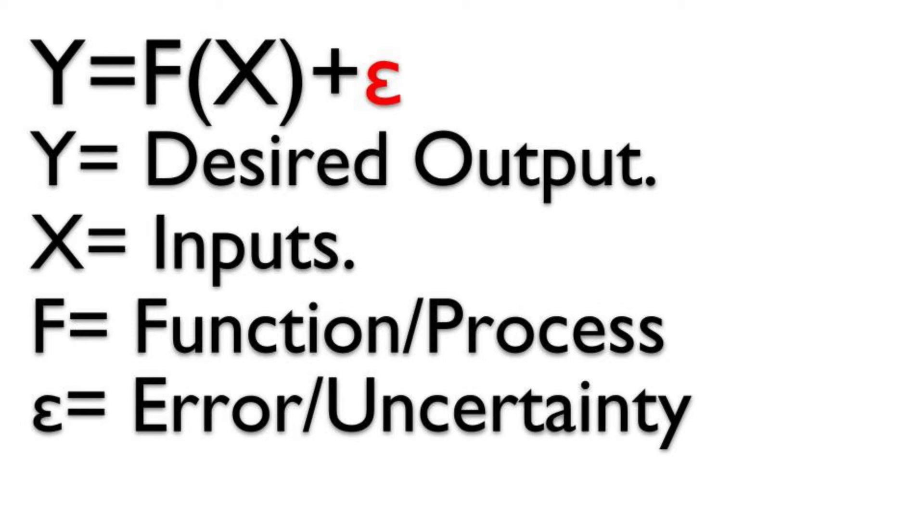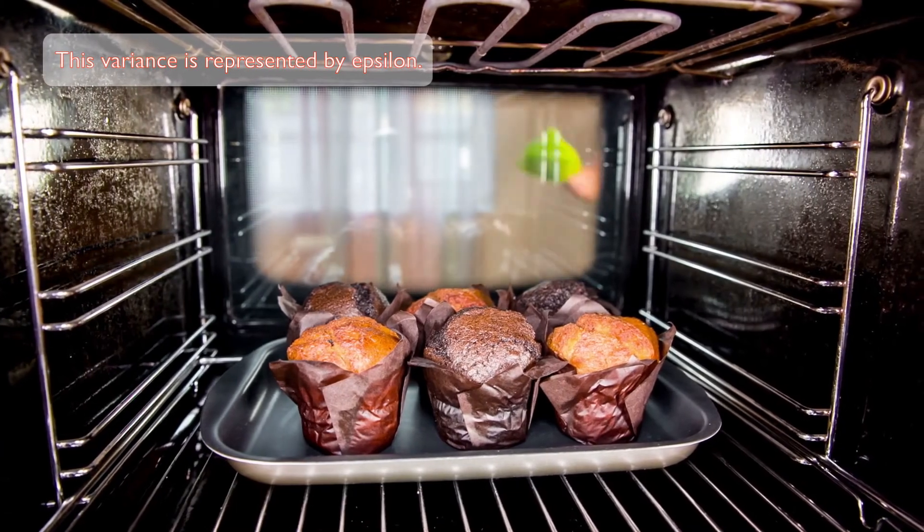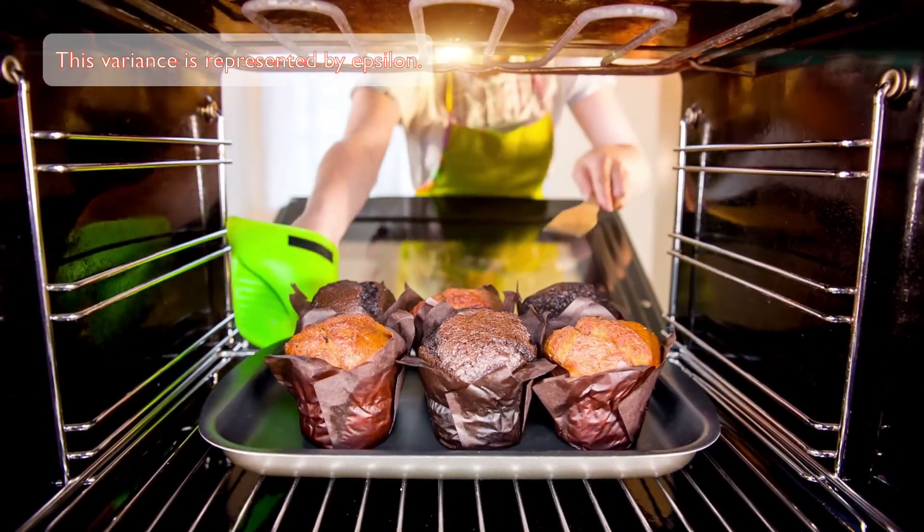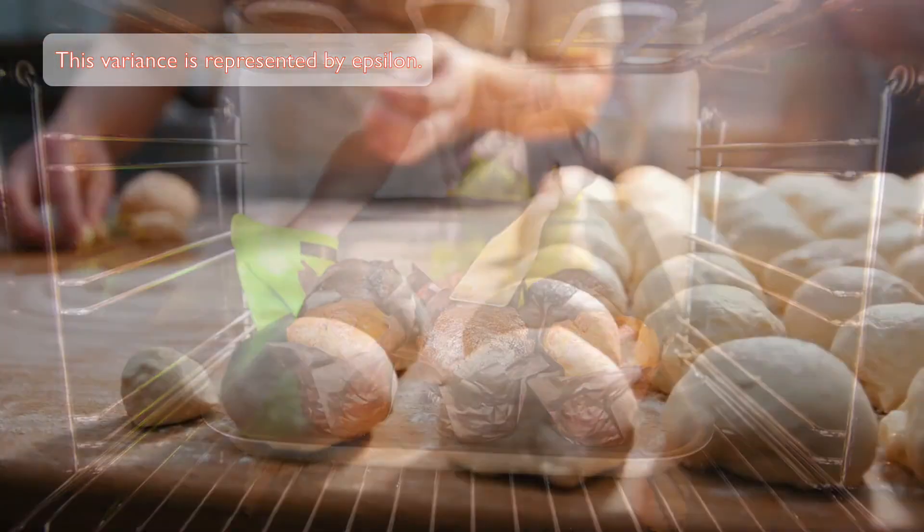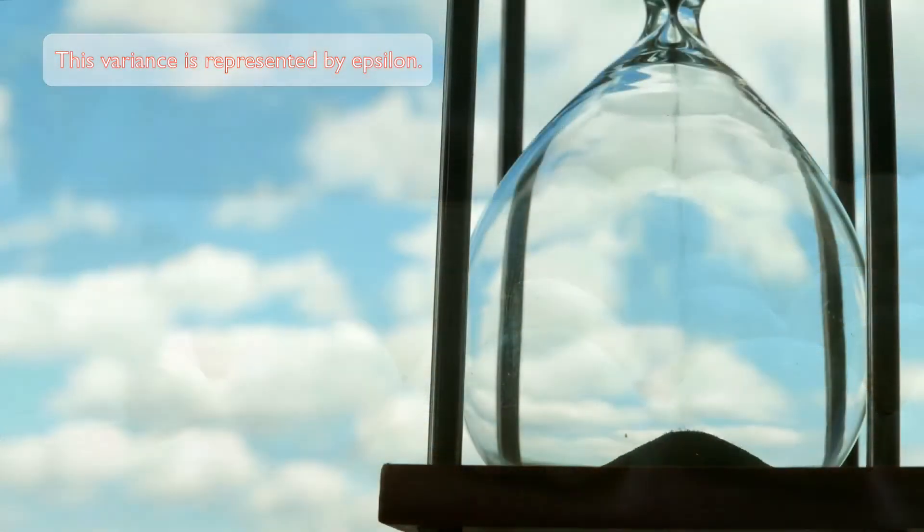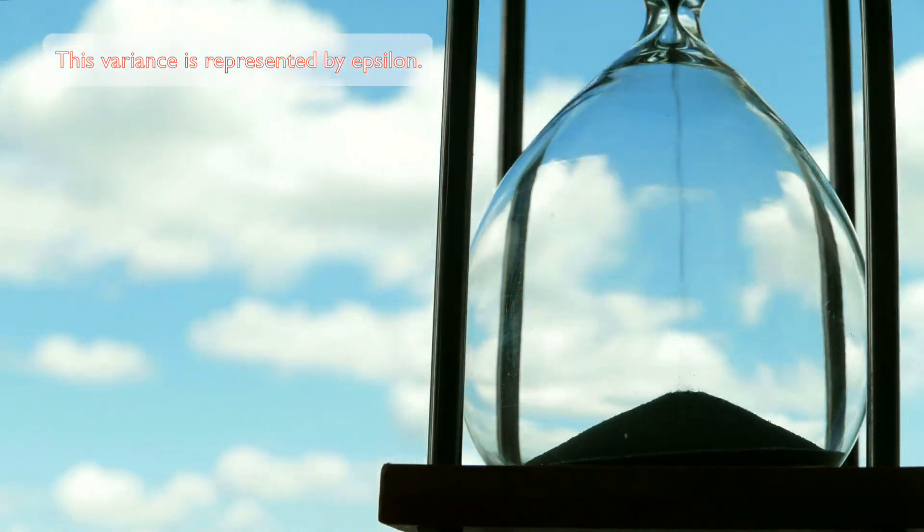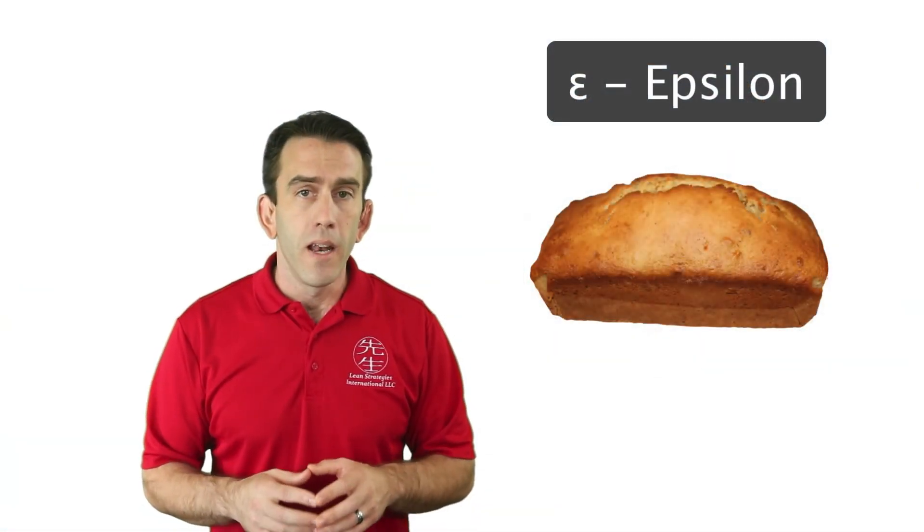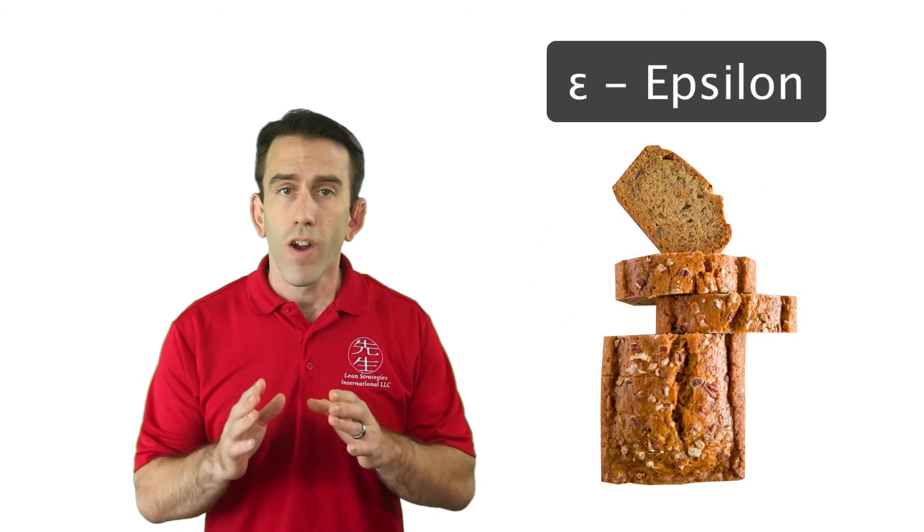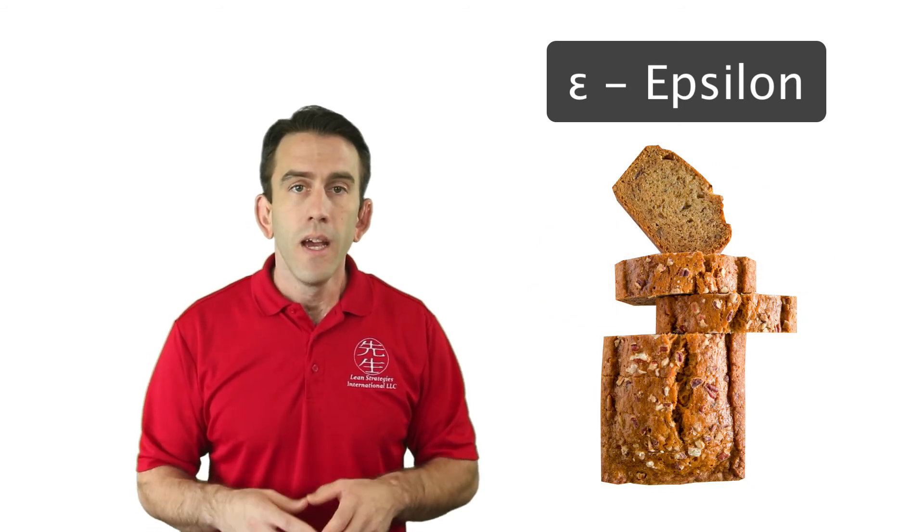For example, if we made five loaves of banana bread, we may use a slightly lower heat setting, a different amount of a specific ingredient, or we may cook bread for a different amount of time. The end result is banana bread, but each loaf of bread will have some difference or variance between loaves. This variance is represented by epsilon.